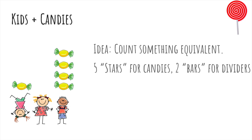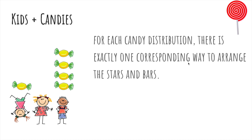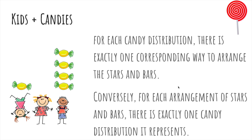So what we get is this arrangement of five stars and two bars, which corresponds to this distribution. And for this one, we would have this arrangement here, where there's one candy, zero, and four. And so for each candy distribution, there's exactly one corresponding way to arrange the stars and bars. And for each arrangement of stars and bars, there's exactly one candy distribution it represents.